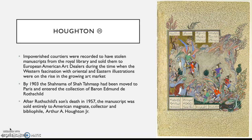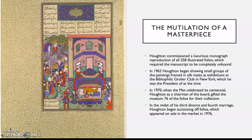Two years after Rothschild's son's death in 1957, the manuscript in its entirety was sold to the American collector and bibliophile Arthur A. Houghton Jr. Houghton then commissioned a luxurious monograph reproduction of all 258 pages of illustration, but to make the plates for this publication, the manuscript apparently had to be completely unbound — and it was never put back together again.